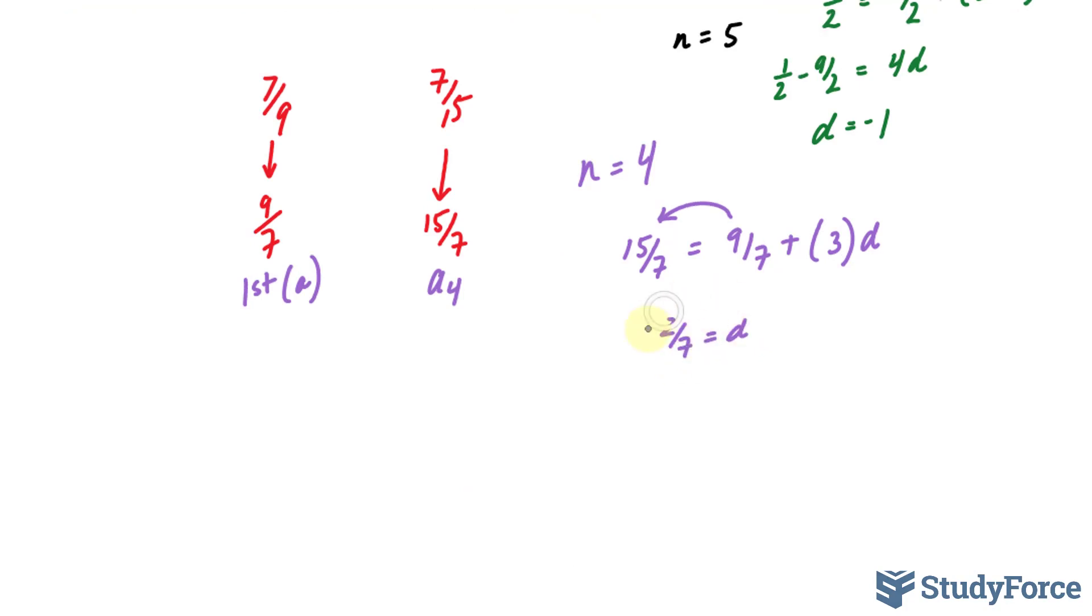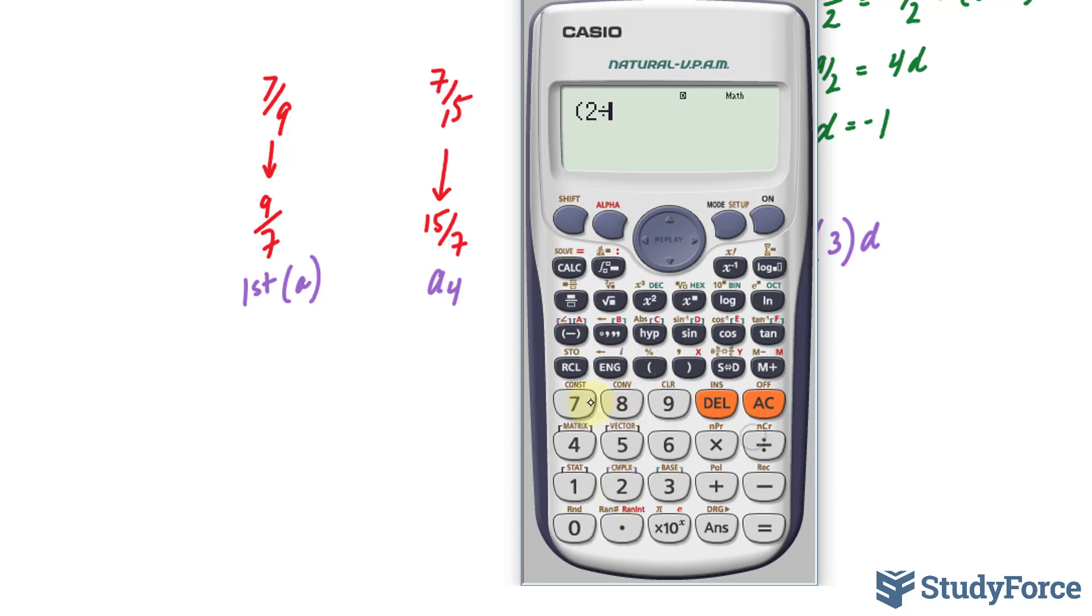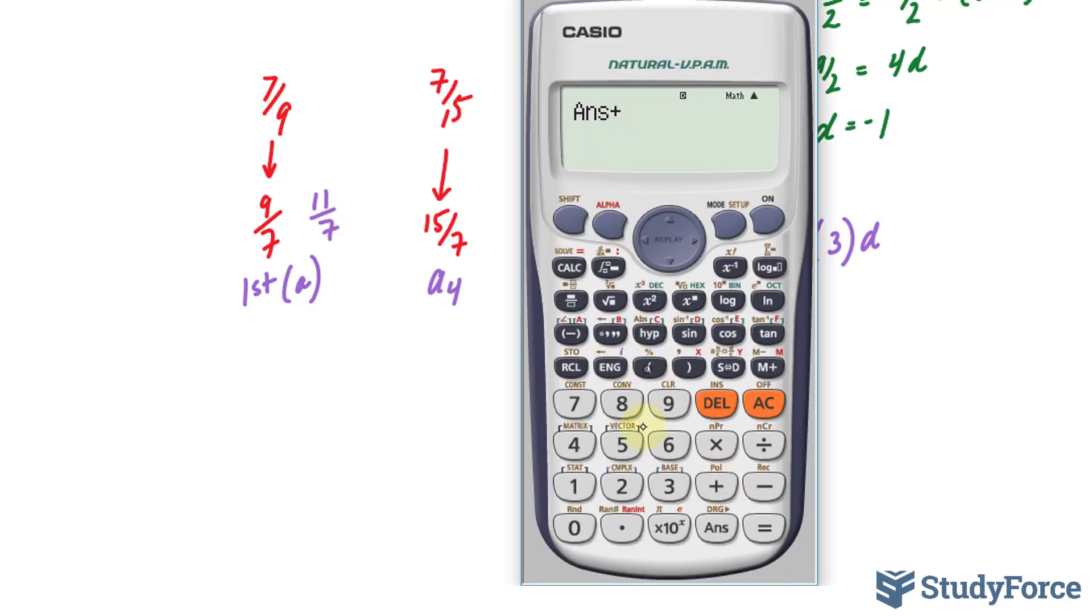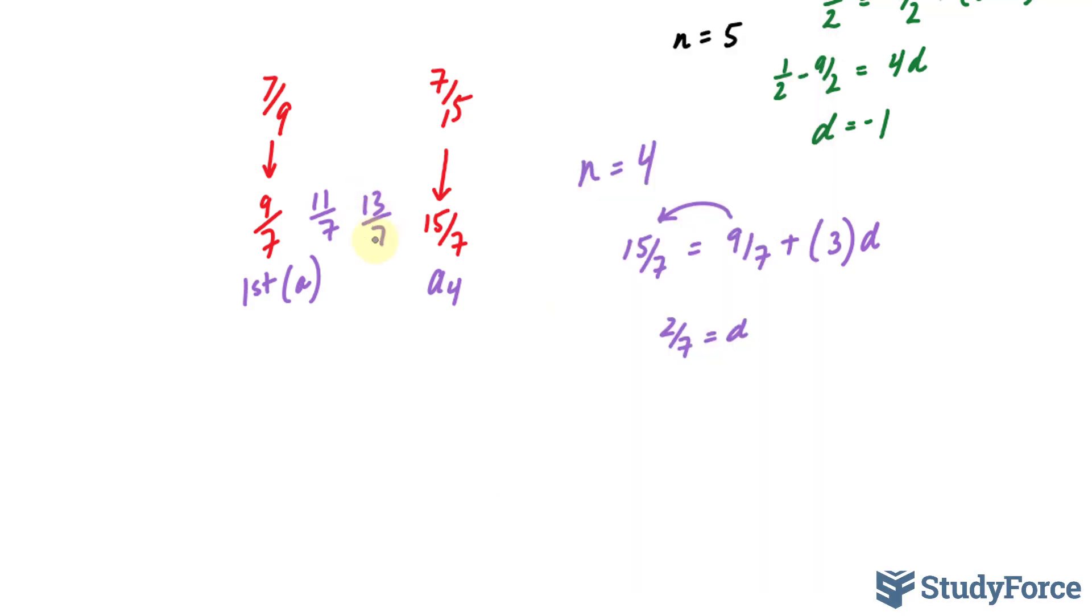Now that I've found my difference of 2 over 7, I can take that number and add it to 9 over 7. That gives me 11 over 7. 11 over 7. I'll do it once more. Plus 2 over 7. That gives me 13 over 7.